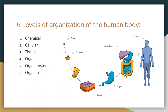Now we're going to go over the six levels of organization of the human body — basically like steps. We start from the bottom and keep going up. The first level is chemical, then cellular, tissue, organ, organ system, and organism. It goes from a small little thing all the way up to an organism, which is you.